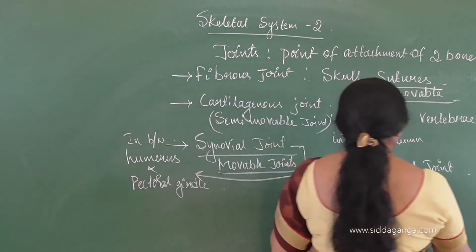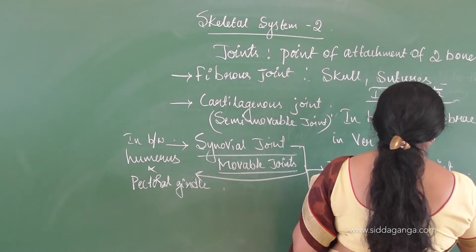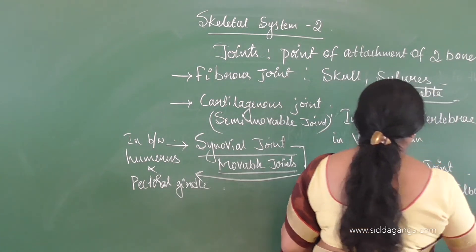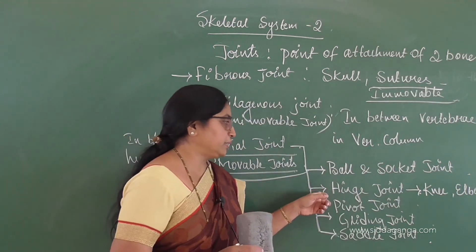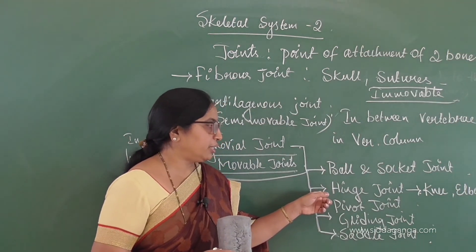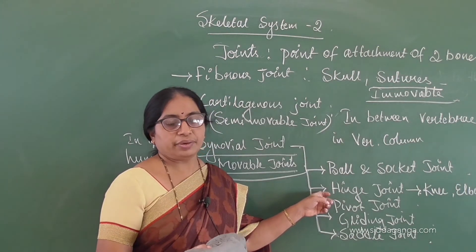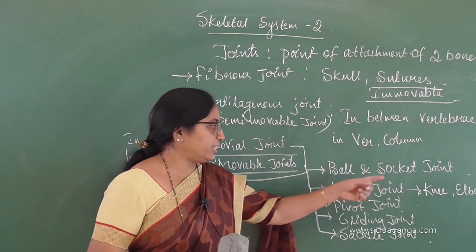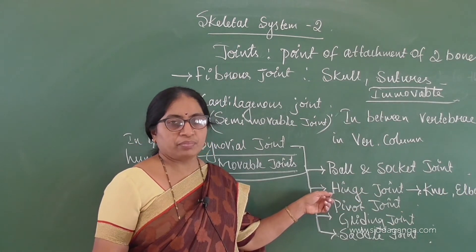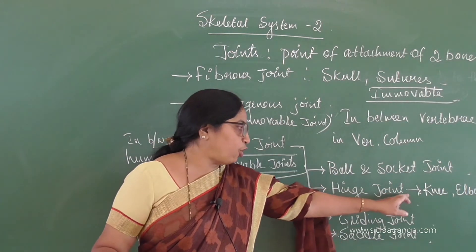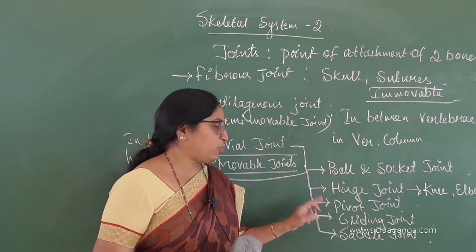The hinge joint is present at the knee joint and the elbow joint. At the elbow, the humerus joins with the radius and ulna; at the knee joint, the femur joins with the tibia and fibula. That point of contact is called the hinge joint.